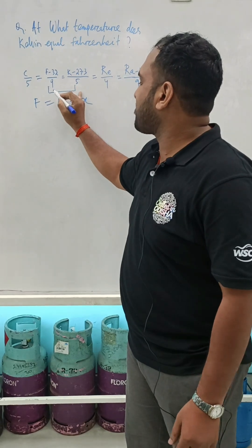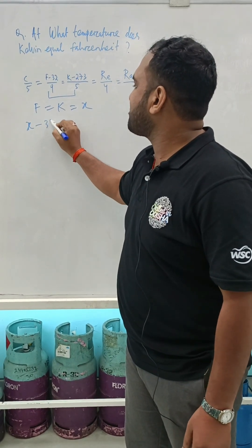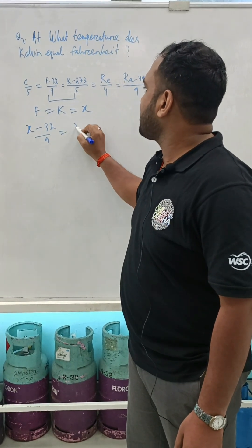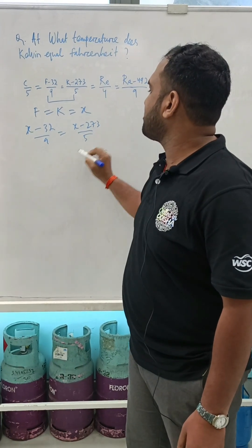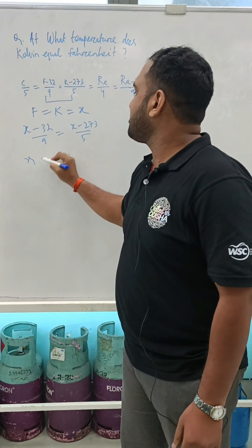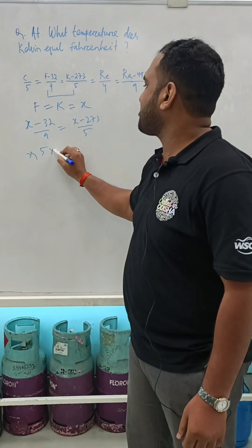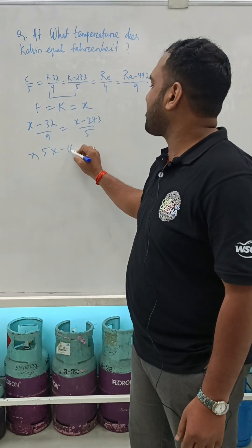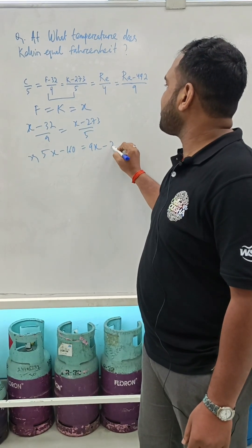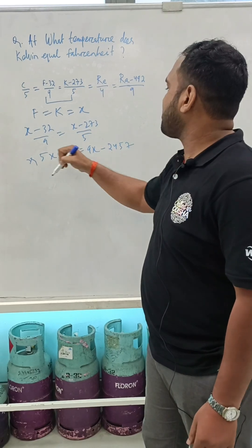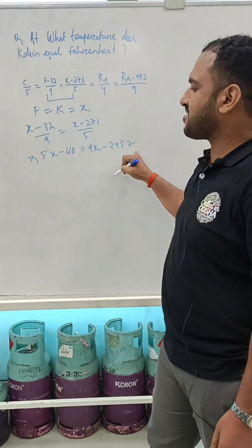This can be written as: (X minus 32) upon 9 equals (X minus 273) upon 5. By cross multiplication, this becomes 5X minus 160 equals 9X minus 2457, since 9 multiplied by 273 equals 2457.